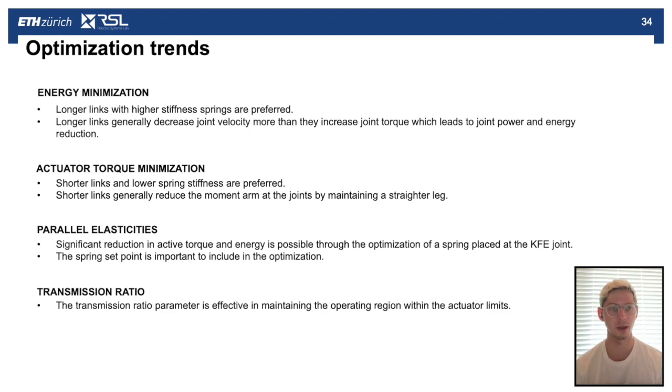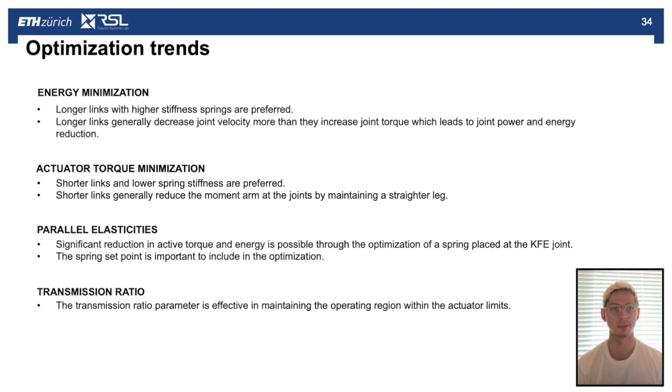Finally, the transmission ratio parameter proved really effective in maintaining the operating region within the actuator limits. Intuitively for the torque minimization case, we're going to want a transmission ratio which just minimizes this actuator torque. But often we're at the limits of speed of the actuator, and so in these cases the transmission ratio is actually selected sometimes to increase the actuator torque, but in doing so it keeps the design within the actuator limits for speed and torque.